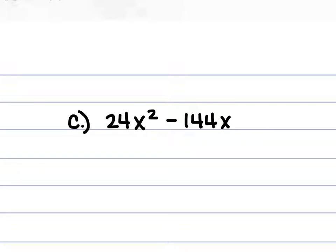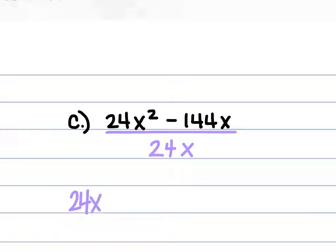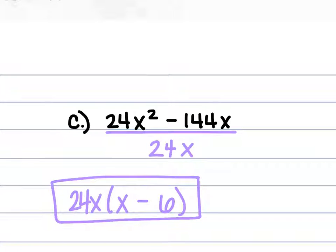For c, we have 24x² minus 144x. Their greatest common factor is 24x, so that comes out front. 24x² divided by 24x is x, and negative 144x divided by 24x is negative 6. So we have 24x times (x minus 6).